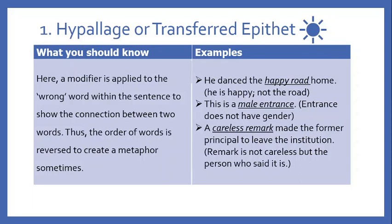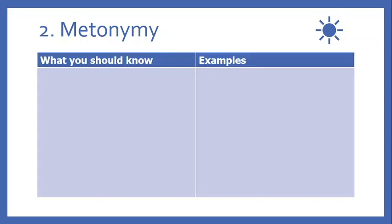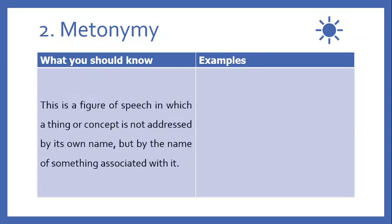The second figure of association is metonymy. Metonymy is a figure of speech in which a term or concept is not addressed by its own name but by the name of something associated with it — a concept used to address a particular idea is replaced by something associated with that idea.